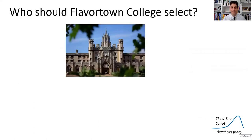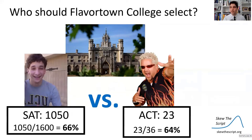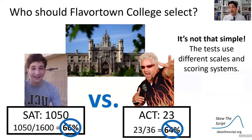We're both applying for admission to Flavor Town College. The question is: who should they select — me with an SAT score of 1050, or Guy Fieri with an ACT score of 23? One simple analysis would be to divide points earned by the total. I got 1050 out of 1600, or 66%, and Guy Fieri got 23 out of 36, that's 64%. So maybe I'm the better one to admit — but unfortunately it's not that simple. These tests use very different scoring scales, so this is not a fair comparison.